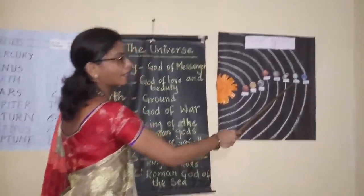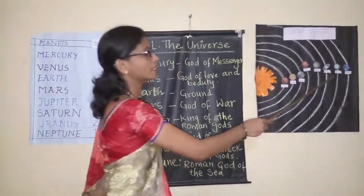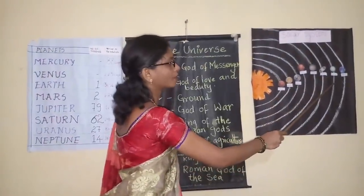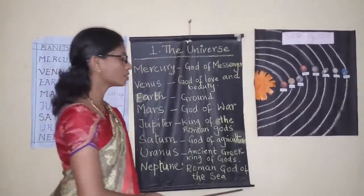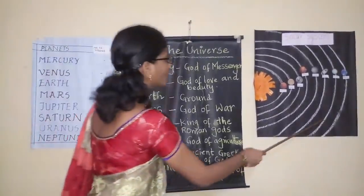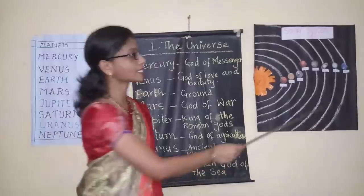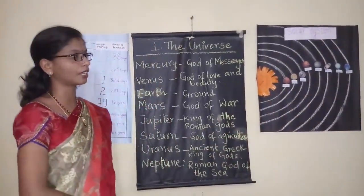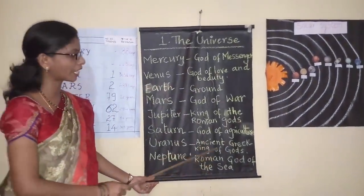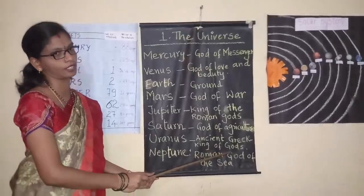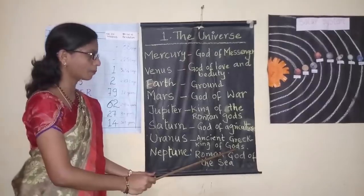The seventh planet is Uranus. It is the seventh planet and third largest planet in the solar system. As it is very far away from the sun, it is known as the blue planet. Uranus takes 84 years to complete one revolution around the sun. It is known as the ancient Greek king of gods.